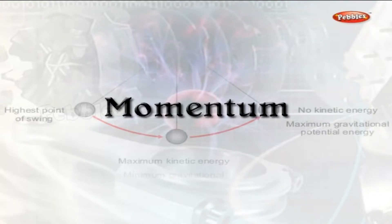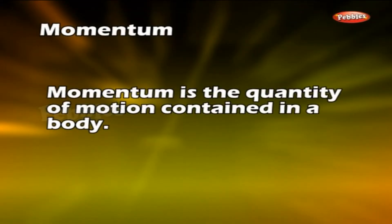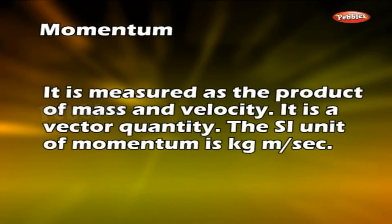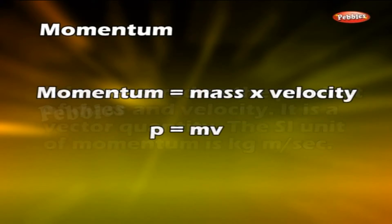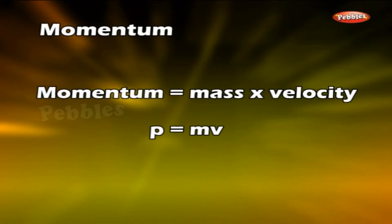Momentum is the quantity of motion contained in a body. It is measured as the product of mass and velocity, and it is a vector quantity. The SI unit of momentum is kilogram meter per second. Momentum is equal to mass multiplied by velocity: P = MV.